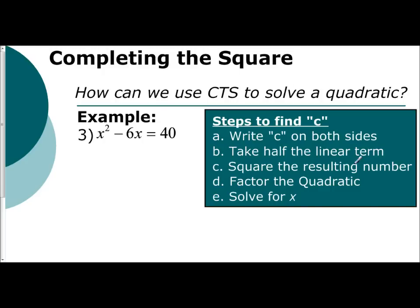So I have the steps for completing the square in this box. Write c on both sides, take half the linear term, square the result, the number, factor, and then solve for x. So we're going to go through all these steps with this example to kind of show the explanation.